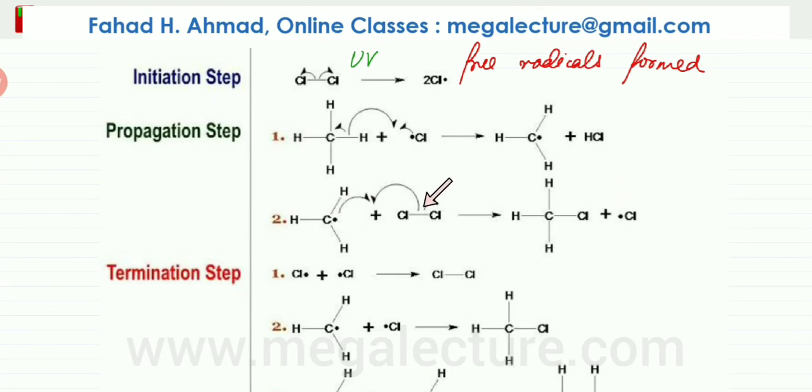This methyl radical that is formed again attacks chlorine molecules, tries to complete its bonds, tries to take away electrons from chlorine, and makes chlorine bond with it, which results in the formation of a substitution product where the H has now been successfully substituted by CL. And another CL radical is produced, and the process keeps on repeating.